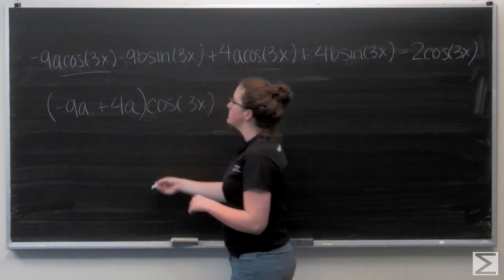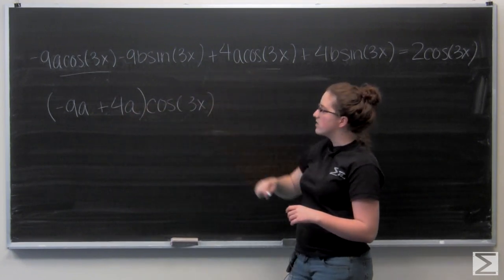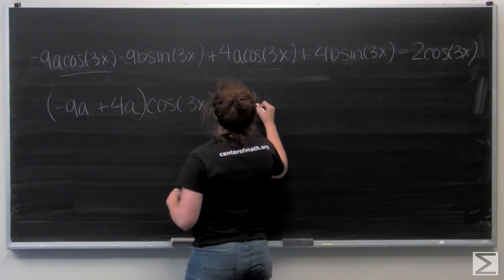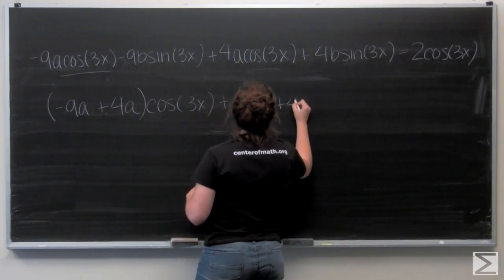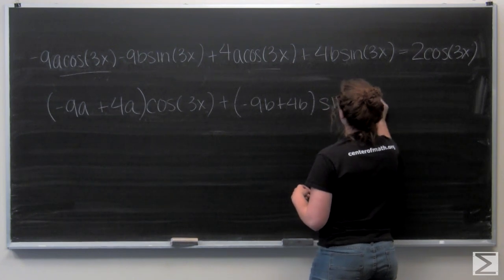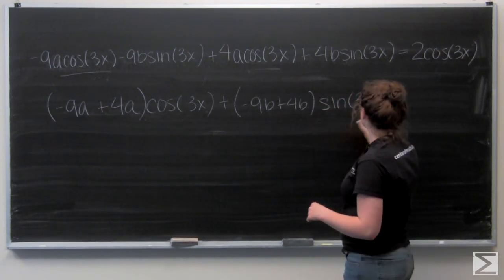So for cosine I have negative 9a plus 4a cosine of x. And then for sine I have negative 9b plus 4b sine of 3x.